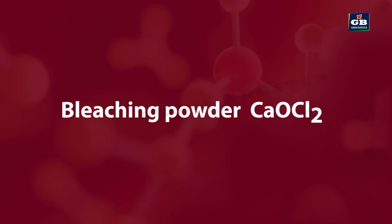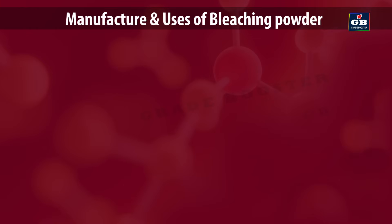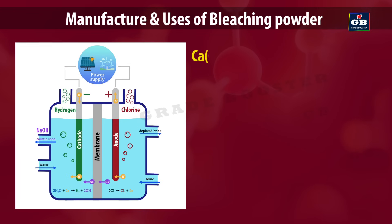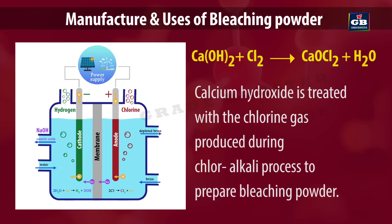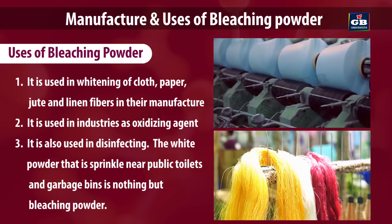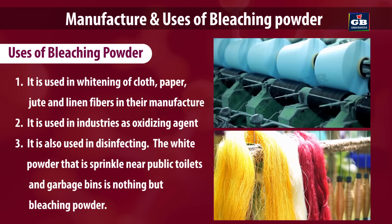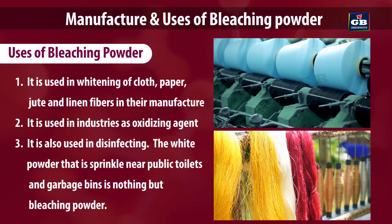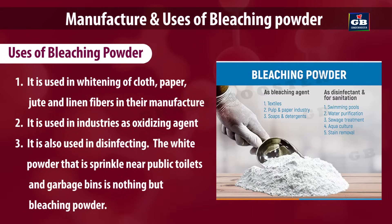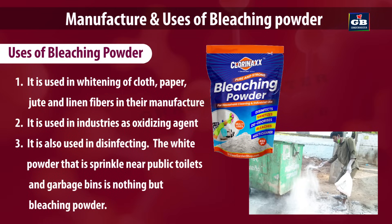Bleaching powder (CaOCl2) — Manufacture and uses. Calcium hydroxide is treated with chlorine gas produced during the chloralkali process to prepare bleaching powder. Uses: it is used in whitening of cloth, paper, jute and linen fibers in their manufacture. It is used in industries as an oxidizing agent and also in disinfecting. The white powder sprinkled near public toilets and garbage bins is bleaching powder.